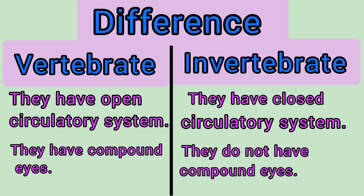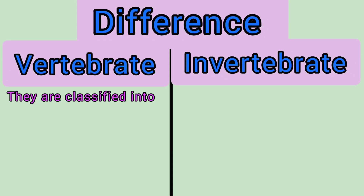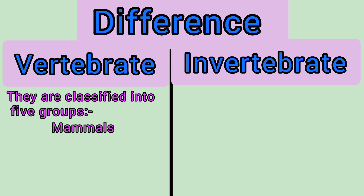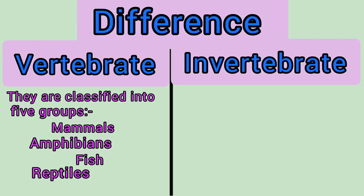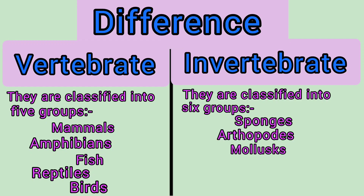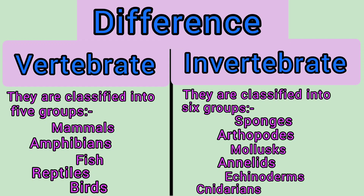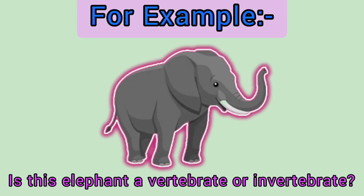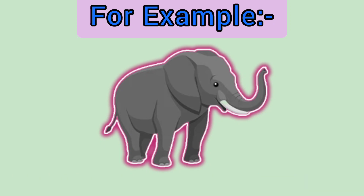Vertebrates don't have compound eyes. Vertebrates are classified into five groups: mammals, amphibians, fish, reptiles, and birds. Invertebrates are classified into six groups: sponges, arthropods, mollusks, annelids, echinoderms, and cnidarians. For example, is this elephant a vertebrate or invertebrate?